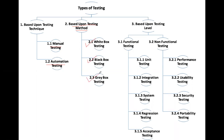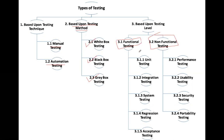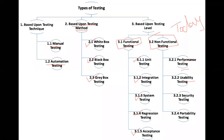In yesterday's lecture, we discussed testing based upon the levels. Based upon the levels, testing can be of two types: functional and non-functional. We have already discussed functional testing in our previous session, covering unit testing, integration testing, system testing, regression testing, and acceptance testing. Today, we will discuss non-functional testing, specifically performance testing, usability testing, security testing, and portability testing.